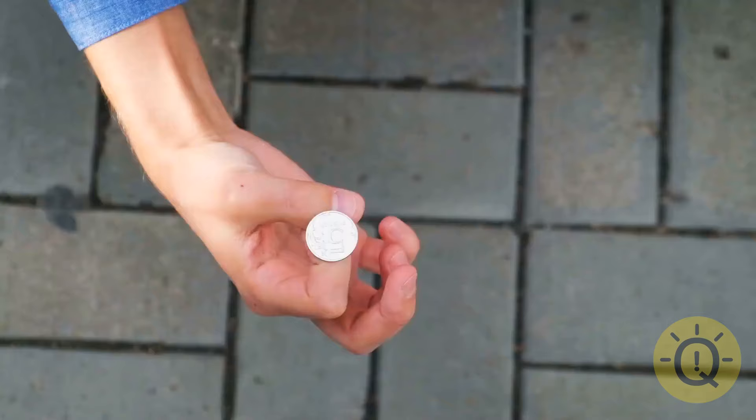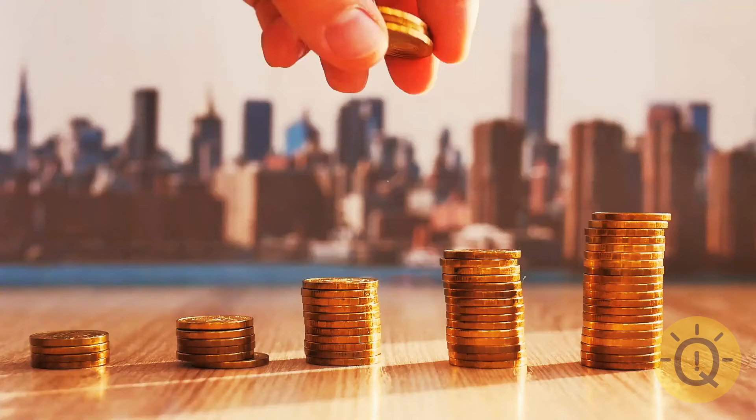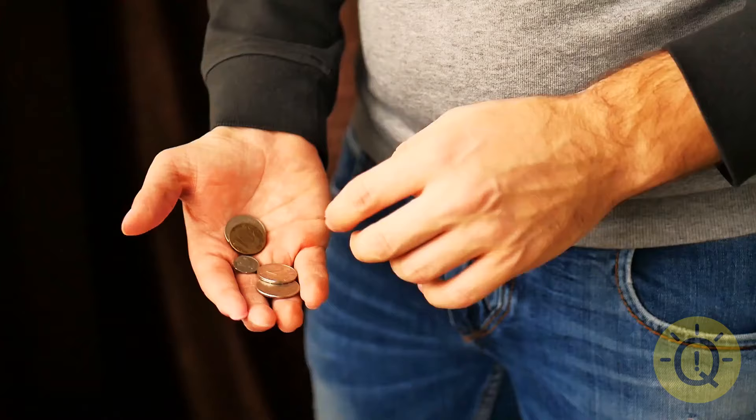Dropping a penny from the Empire State Building can obliterate a person below. Myth. Well, the penny won't tickle, but it will not damage anyone on the ground. Simply, the penny can't build up enough speed while it's tumbling to the ground. Better to just keep the change in your pocket.